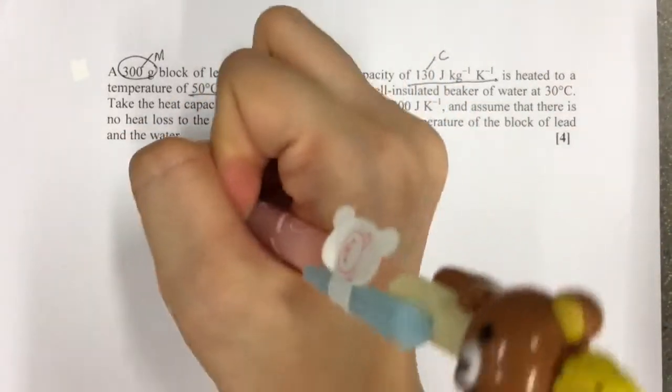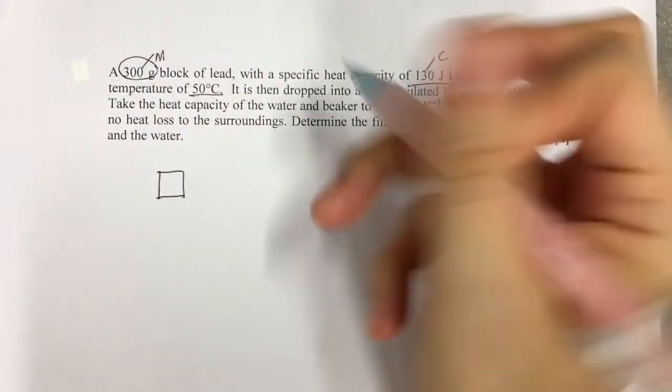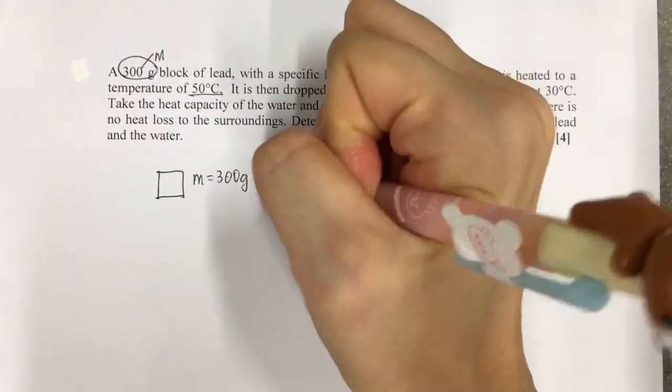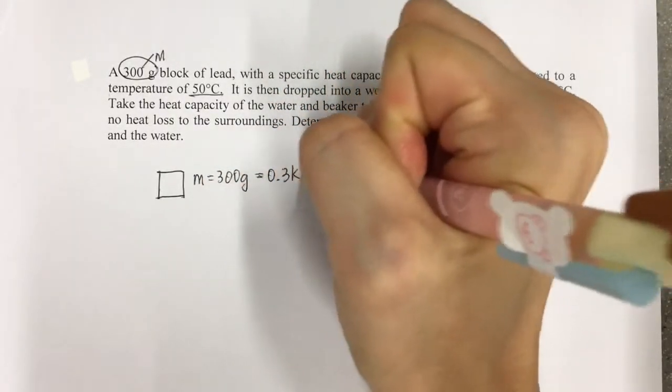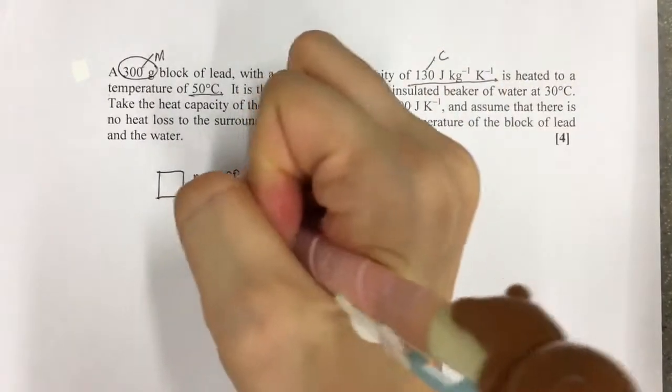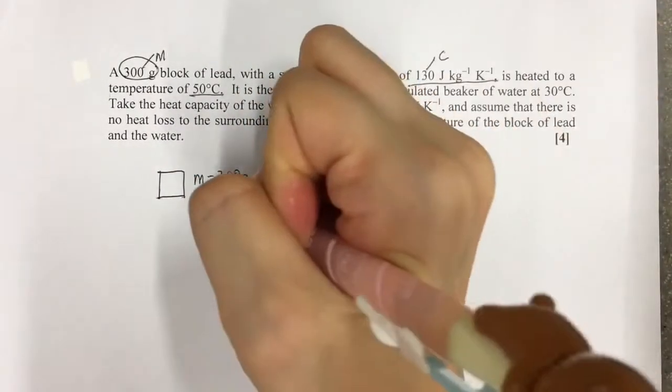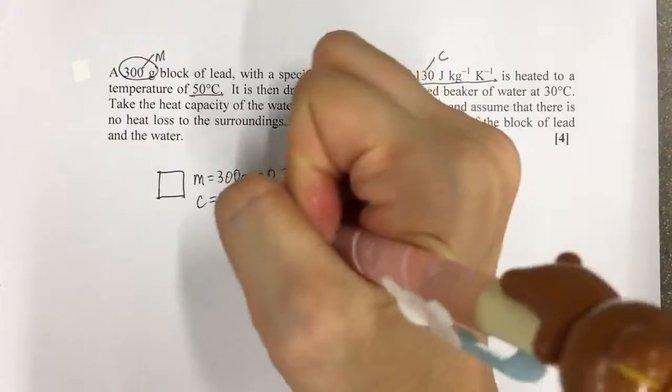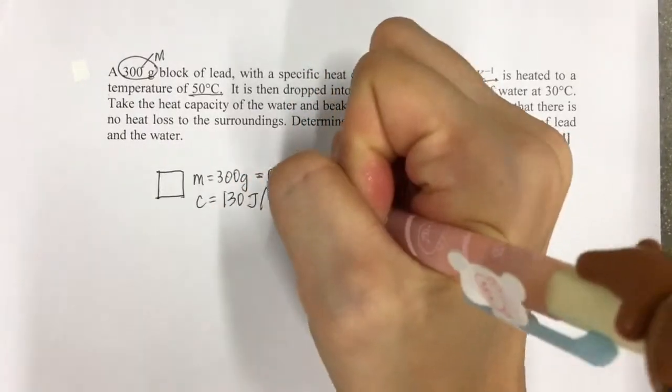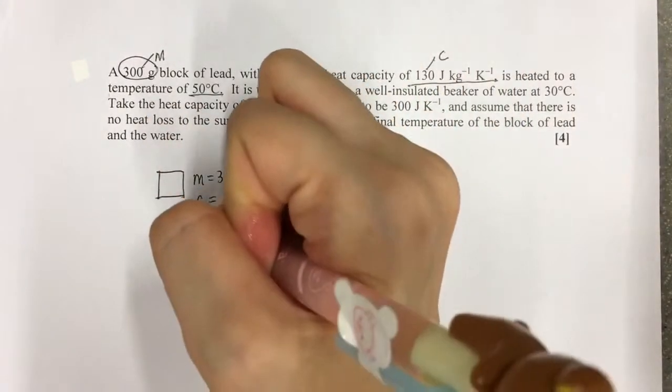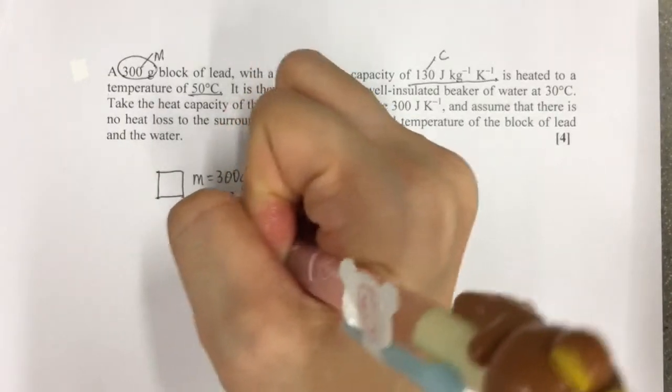So we have this block of lead. Mass is 300g, or in terms of kg it will be 0.3 kg. C, specific heat capacity, is 130 J per kg Kelvin, heated to a temperature of 50 degrees Celsius.